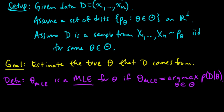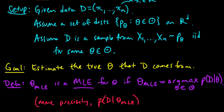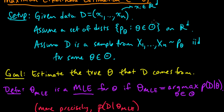I wrote it this way, but more precisely, the probability of the data under theta MLE equals the maximum value attained for the probability of the data given theta as theta ranges over all possible thetas. I'm using this alternate notation: p sub theta of x is written as p of x given theta.